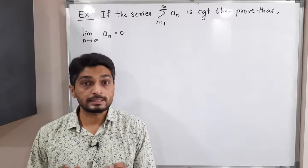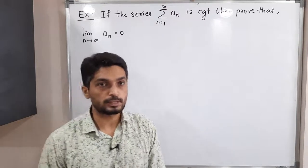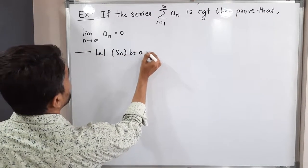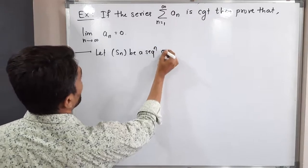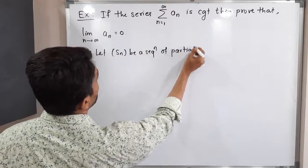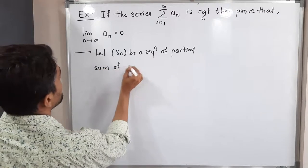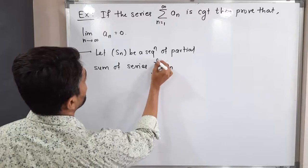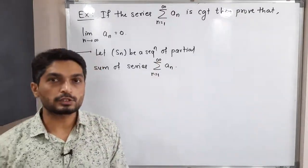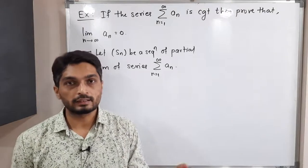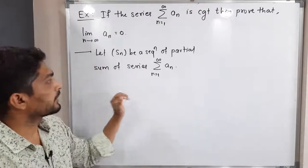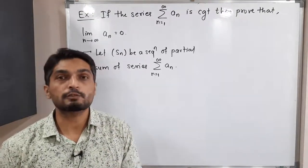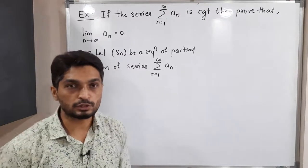So what will we do? We will consider S_n to be the sequence of partial sums of the series summation a_n, with n running from 1 to infinity. You are familiar with a sequence of partial sums S_n — that means the sum of the first n terms. Since we have a convergent series summation a_n, the corresponding sequence of partial sums is also convergent.